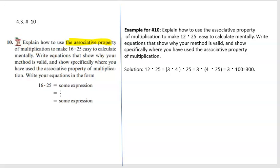Section 4.3, number 10. We're going to use the associative property and also a fact that 25 times 4, or 4 times 25, equals 100.